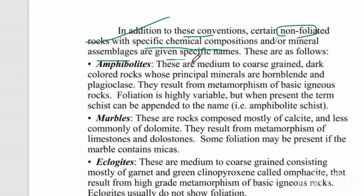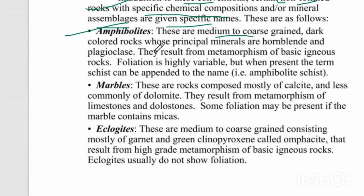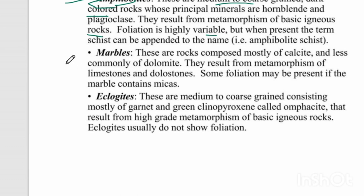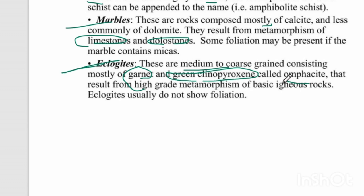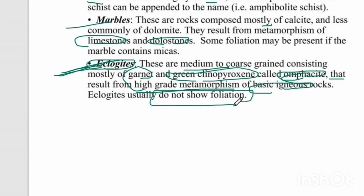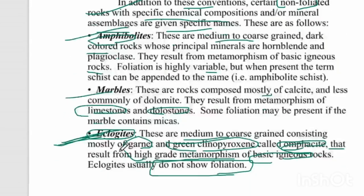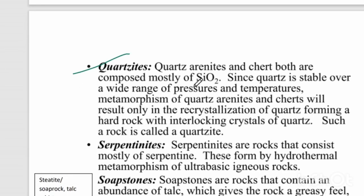Certain non-foliated rocks with specific chemical compositions are given special names. Amphibolite: medium to coarse, green-dark colored, because amphiboles are present — results from metamorphism of basic igneous rock, foliation is highly variable. Marble: composed mostly of calcite, formed by metamorphism of limestone or dolostone. Eclogite: medium to coarse green rock, consisting mostly of garnet, with a green clinopyroxene called omphacite. Eclogite is important — if you see omphacite, mark it as eclogite. It results from high-grade metamorphism of basic igneous rocks and does not show foliation.